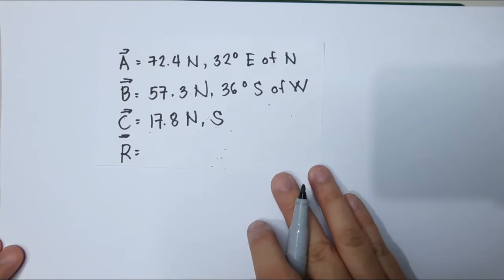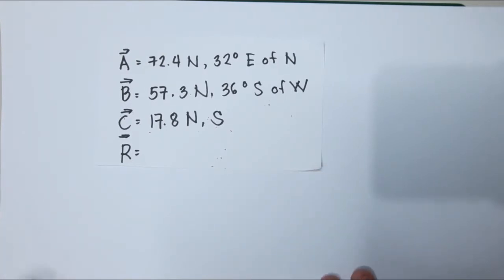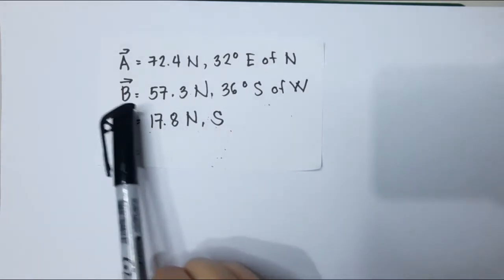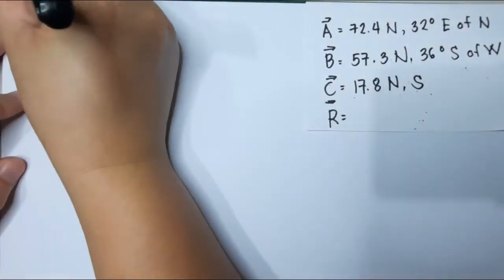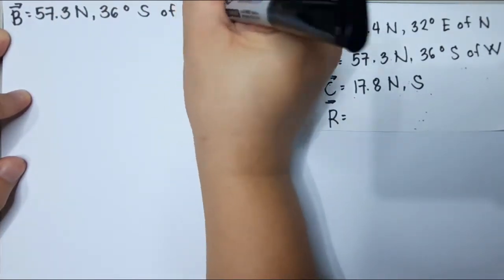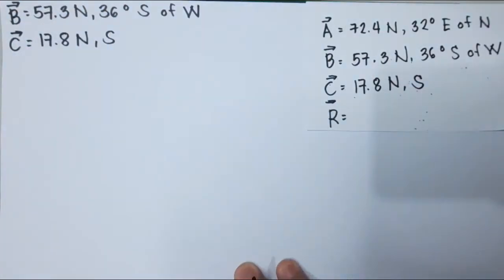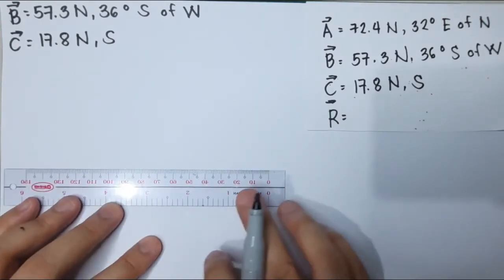Good day! We will now solve another problem for vector addition using the cosine law and sine law method. The given for this problem is we will add vector B to C. Let's write the given. The first thing we have to do is we have to draw our vector.